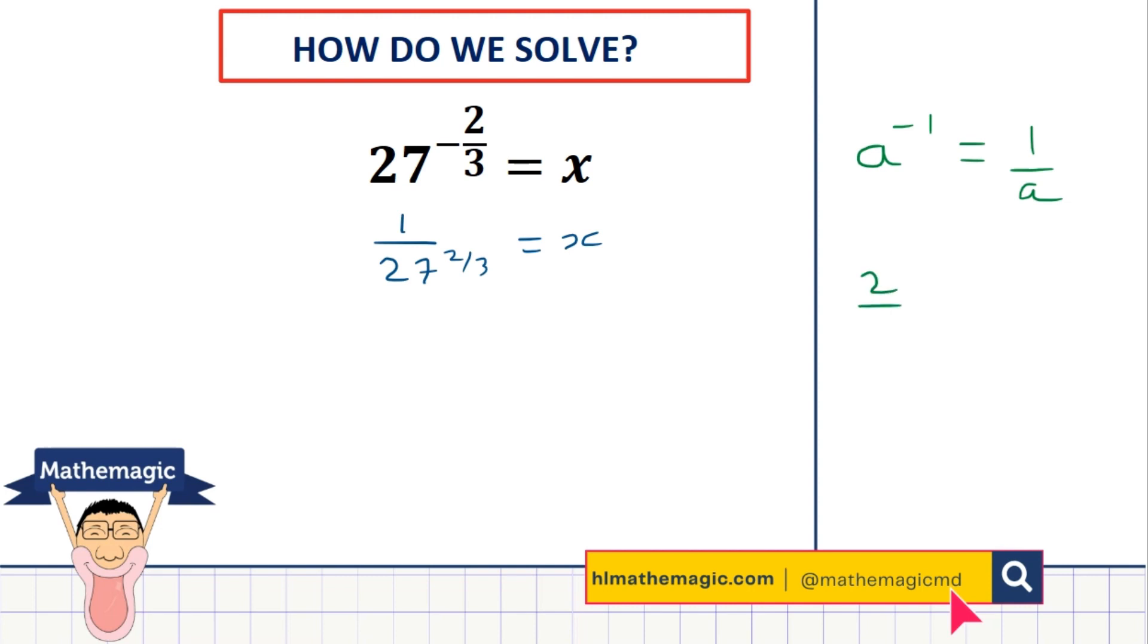So remembering that 2 thirds is the same as 2 times 1 third, your number to the power 2 thirds could be the same as a to the power 2 to the power 1 third, or it could be the same as a to the power 1 third to the power 2.